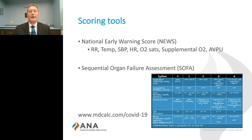Tools like the SOFA score, the Sequential Organ Failure Assessment, or the Apache 2 score are more helpful, but they look at organ dysfunction and predict mortality and may be used as an admission tool to determine which unit that we decide to place the patient on.